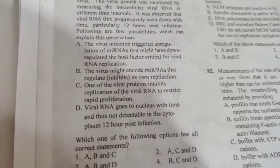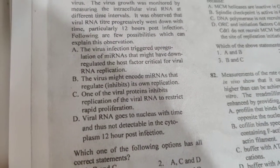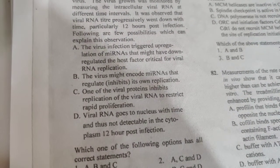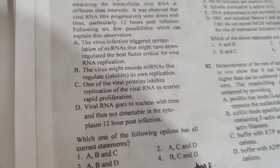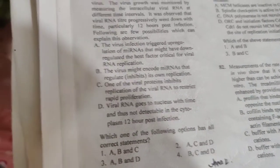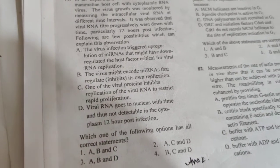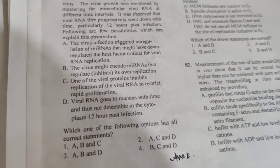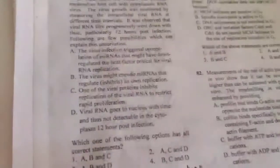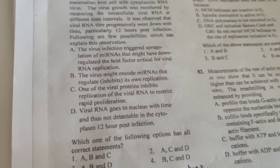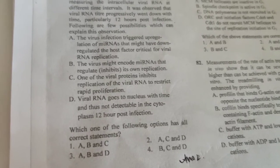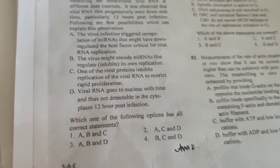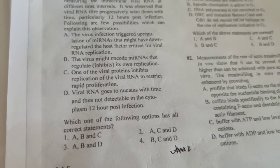So the first option says the virus infection triggered upregulation of miRNA that triggered have down-regulated the host factor critical for viral RNA replication. So basically, here in this case, the miRNA, which basically bound the RNA and which further leads to the degradation of the infected viral RNA. So the fact that the viral RNA is down-regulated, miRNA bound to RNA and leads to the degradation of the viral RNA.